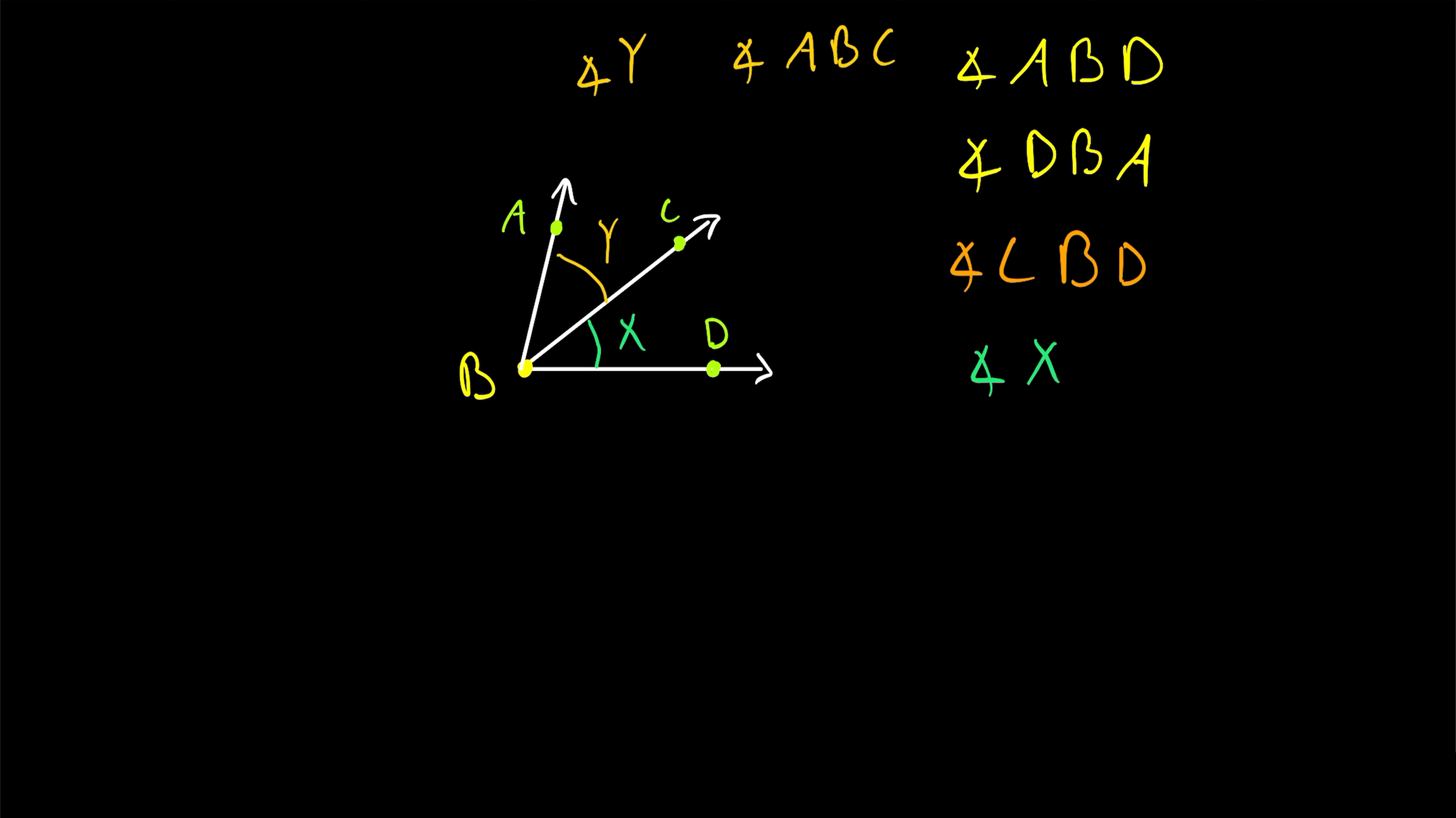However, we've got to be careful, because oftentimes, letters are written inside angles not to name them, but to represent the measure of the angle. And so, for example, in this case, X might be equal to 43 degrees. It might not be the name of the angle, but instead the measure of the angle. And in that case, it would technically be incorrect, or at the very least, bad notation, to call this angle X. Because X is just a degree measure and not a name, so some other angle could have that same degree measure.